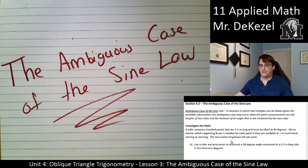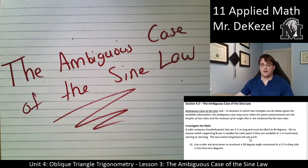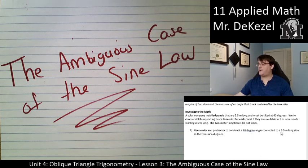We're going to investigate the math first. A solar company installed panels that are 5.5 meters long and must be tilted at 40 degrees. We need to choose which supporting brace is needed for each panel, as they are available in one-meter increments starting at two meters long. The two-meter brace did not work. We're going to use a ruler and a protractor to construct a 40-degree angle connected to a 5.5-meter long side in the form of a diagram.